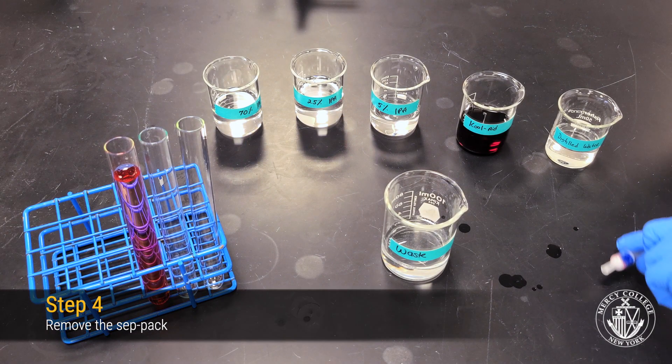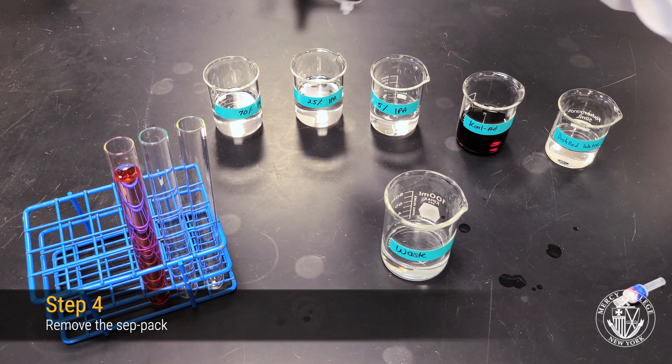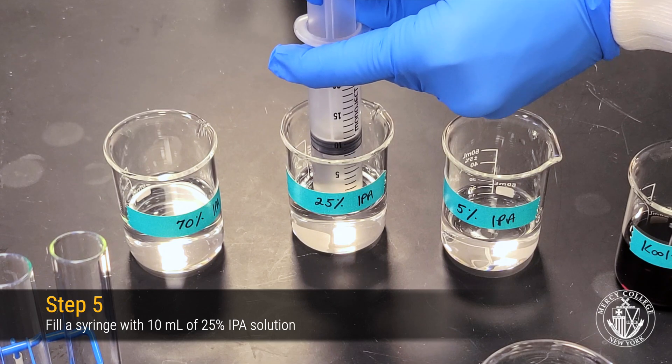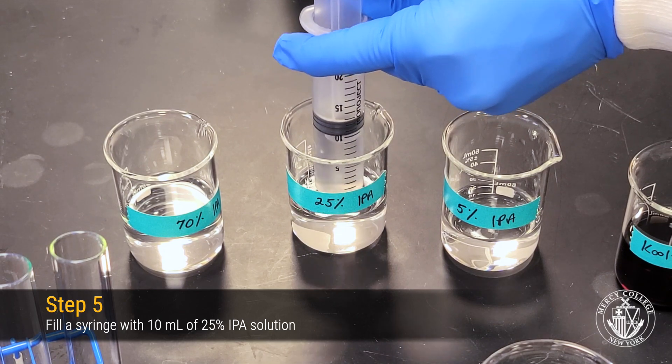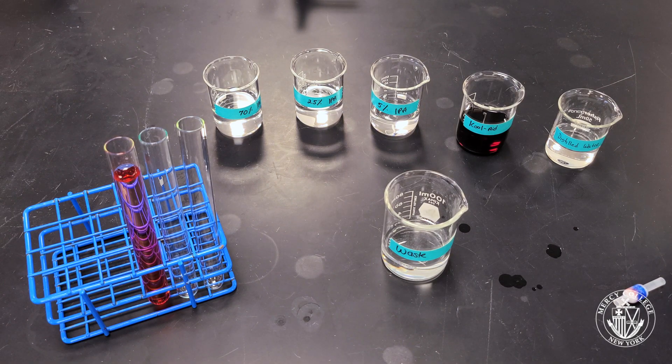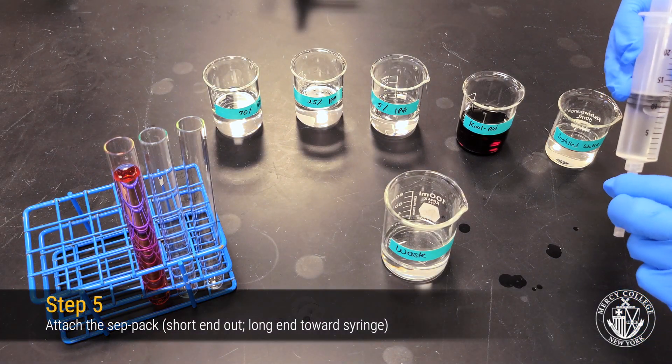Now remove the CEPPAC cartridge from your syringe and refill your syringe using 10 mL of 25% isopropyl alcohol solution. After filling your syringe, reattach the CEPPAC cartridge making sure that the long end is facing toward the syringe.